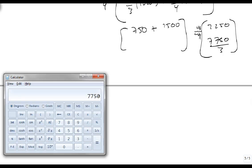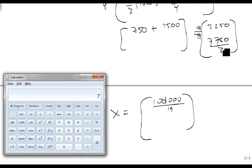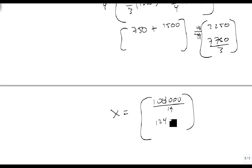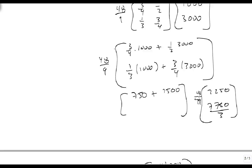So, now we multiply the 48 over 9 in. So, 2,250 times 48, that's 19, not 9, gives me x equals 108,000 over 19. And the other one is 7,750 times 48 is 37,200. That's divisible by 3. So, it's 124,000 over 19. So, this is how much energy I have to produce, and this is how much food I have to produce, so that I can meet a consumer demand of 1,000 units of energy and 3,000 units of food.